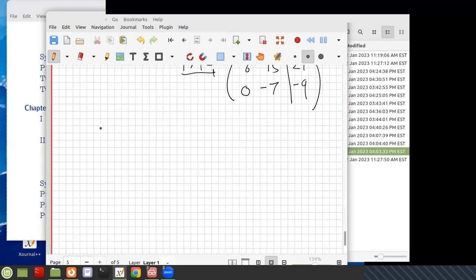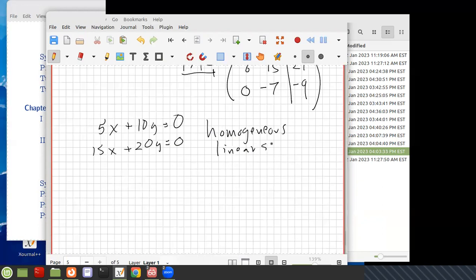So here's a homogeneous system: 5x plus 10y equals 0, and 3x plus, well, let's say we do something simple. Let's say we do 15y. This is called a homogeneous linear system. It has zeros to the right.